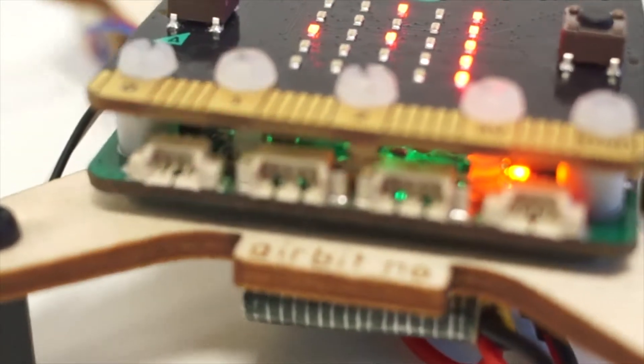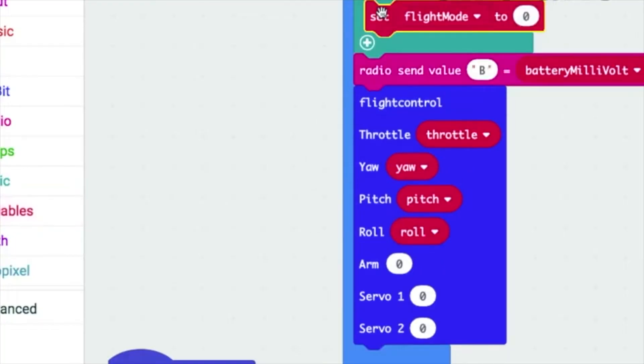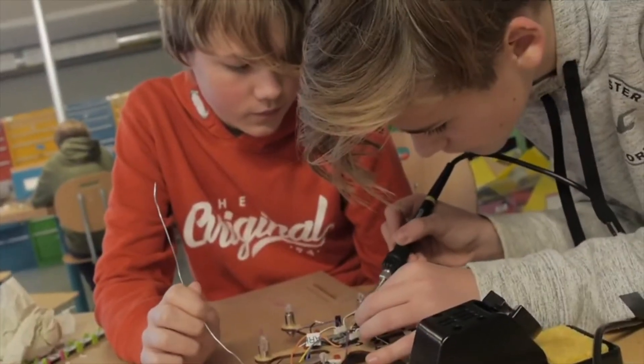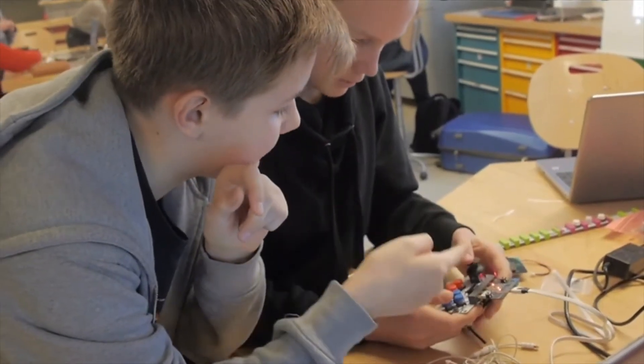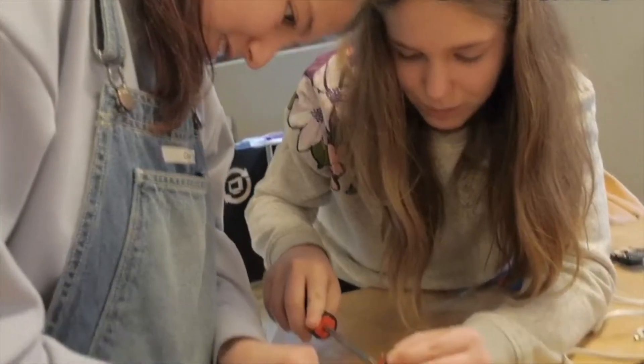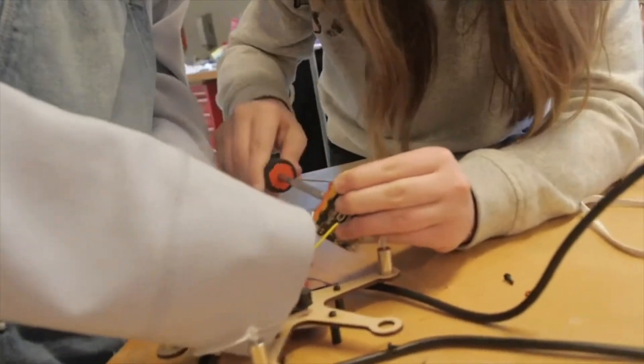AirBit is a drone kit that teaches coding, math, design, electronics, and algorithmic thinking. It's also the world's first microbit drone and the first to use environmentally friendly materials.